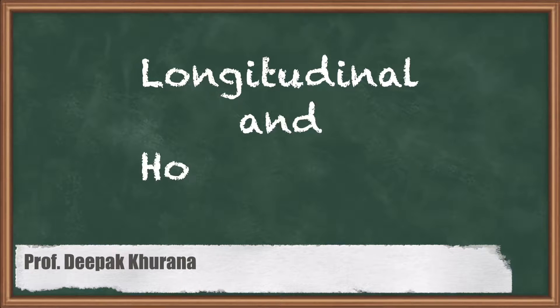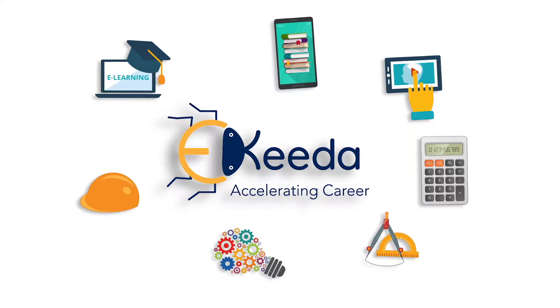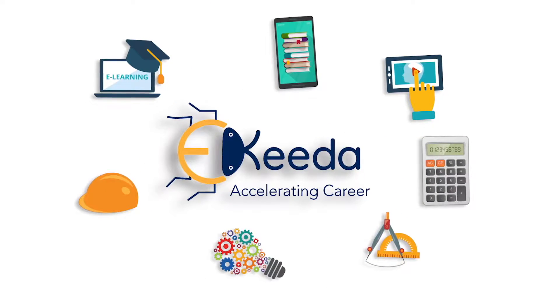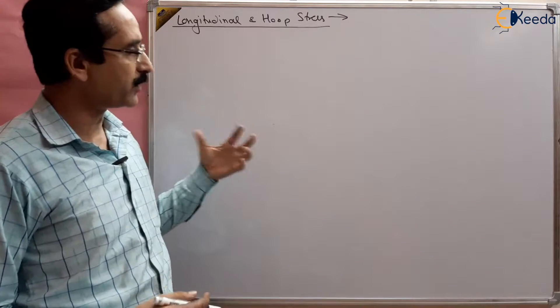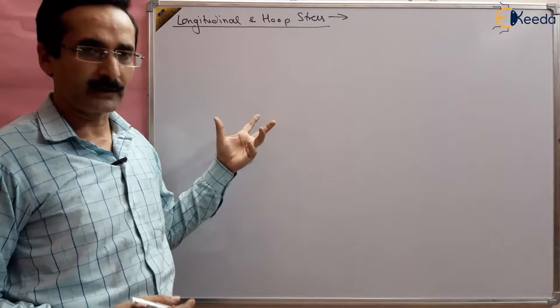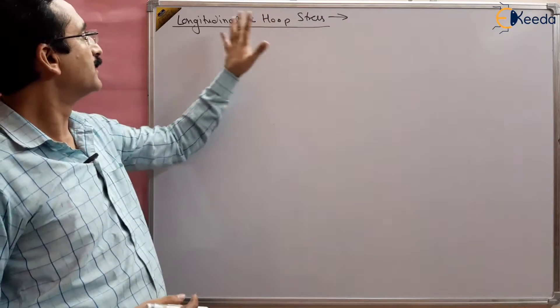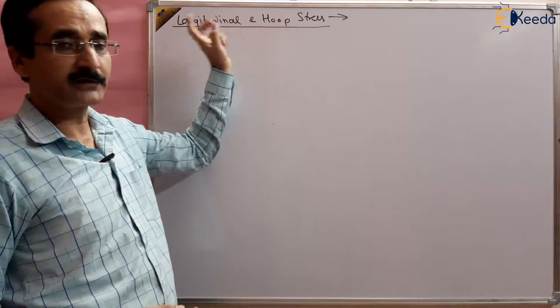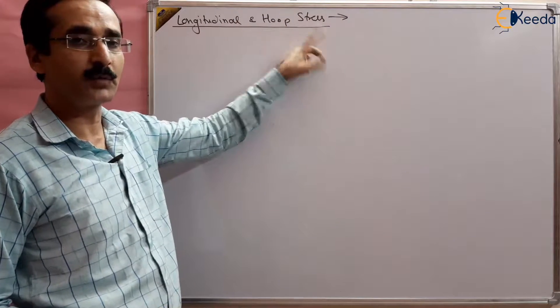Hello students. In this session we are going to study longitudinal stresses and hoop stresses — how we find out mathematically for a cylinder. Later on we will do for spheres, but for spheres there is no longitudinal stress; there is only hoop stress in both directions.